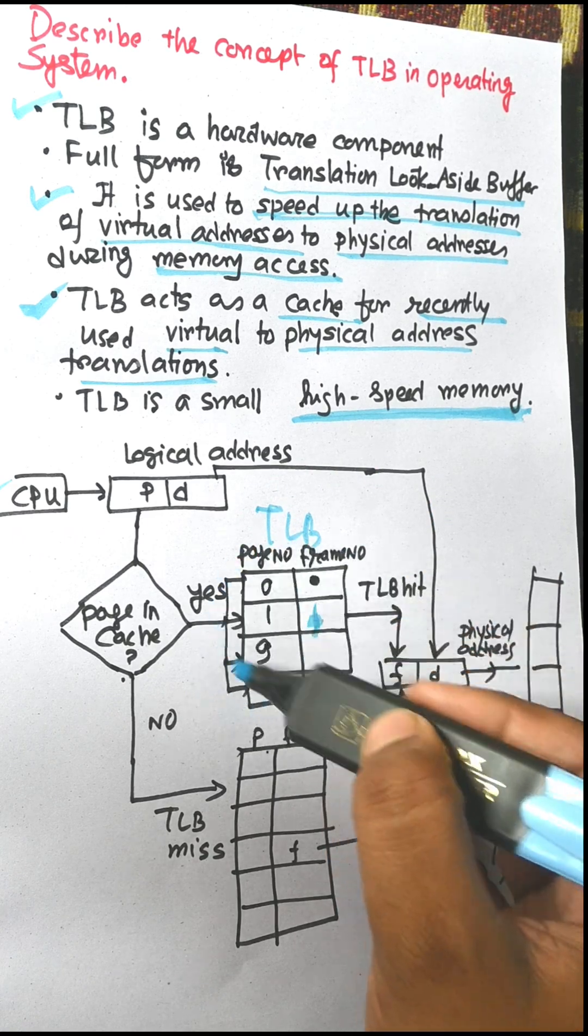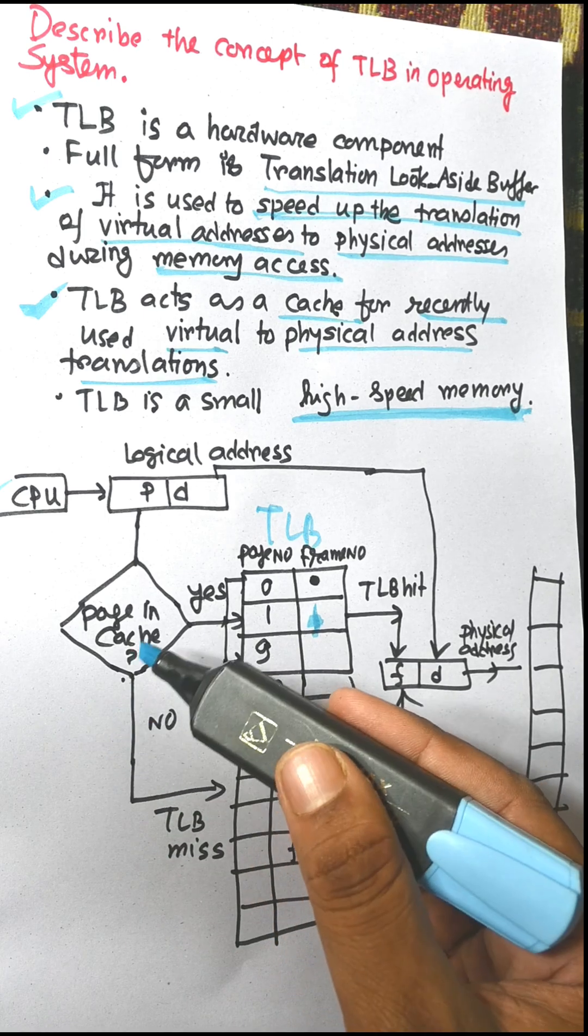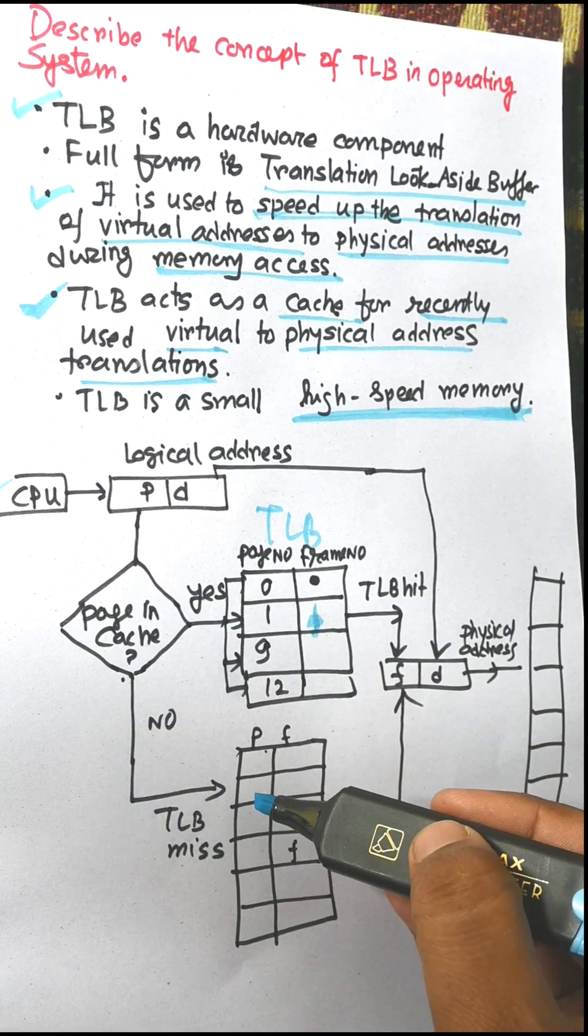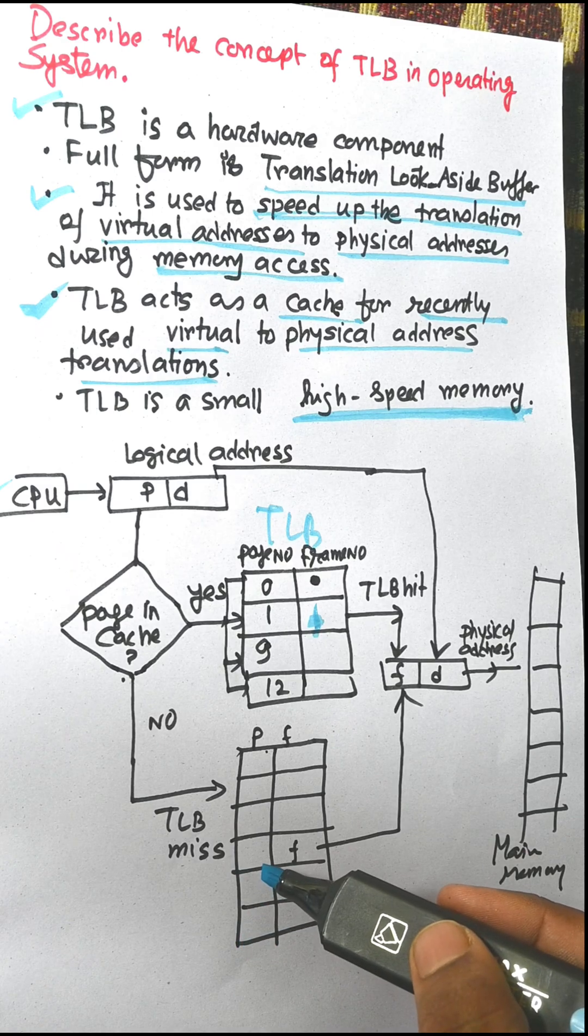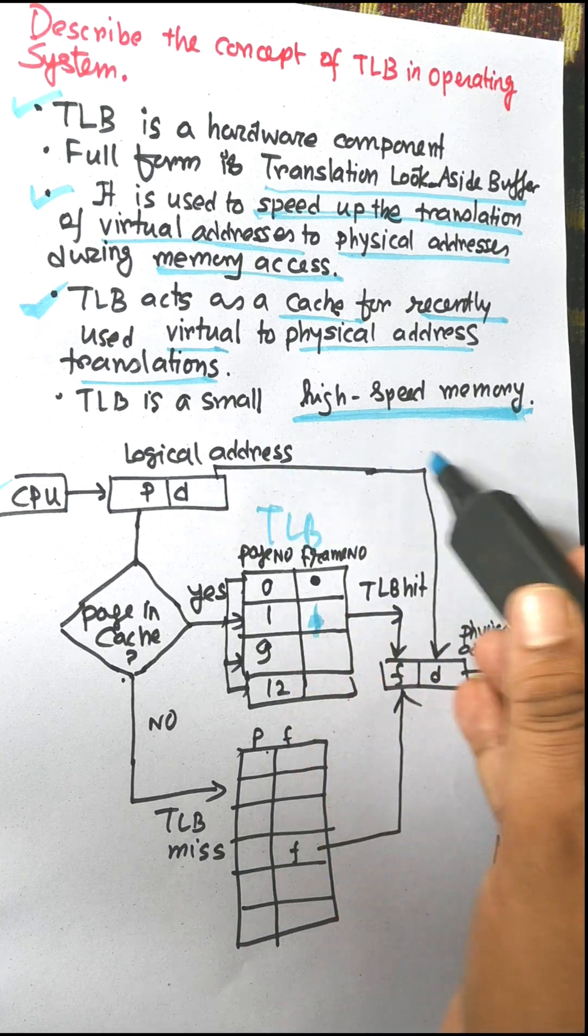If it is not found in the TLB, then we need to search the page table and we get the frame from the page table and the offset is copied here.